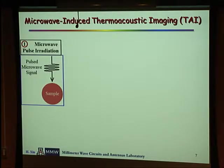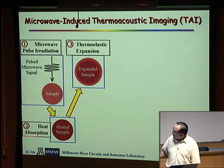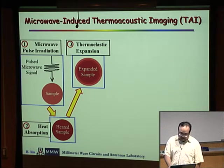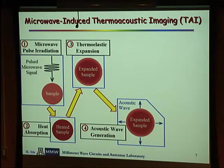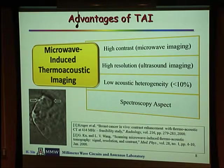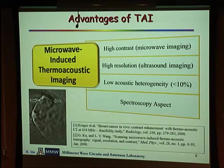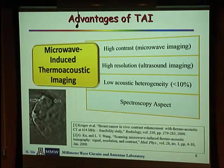This brings us to microwave-induced thermo-acoustic imaging. The mechanism: a pulsed microwave goes through a sample, there is heat absorption, and the sample undergoes thermo-elastic expansion, generating an acoustic wave. Instead of measuring scattered microwave, we measure the generated acoustic signal using acoustic sensors and reconstruct the image. The benefits are that we still have high contrast because the signal source comes from the conductivity and dielectric property difference, and we have much higher resolution compared to traditional microwave imaging because we are now doing ultrasound imaging — ultrasound wavelengths can be much smaller, giving us millimeter or even sub-millimeter resolution.